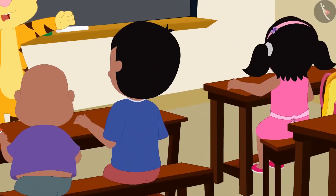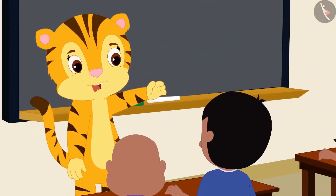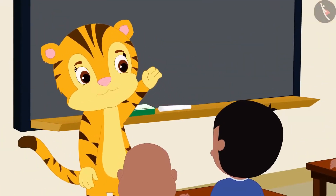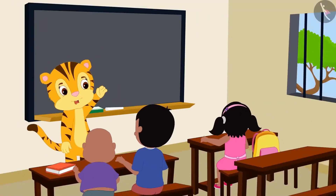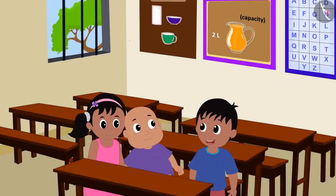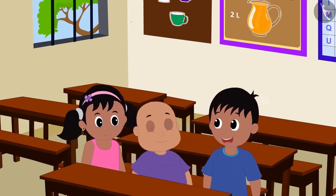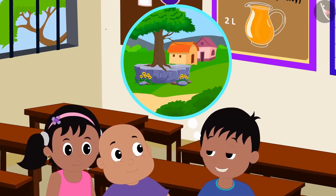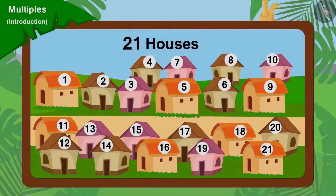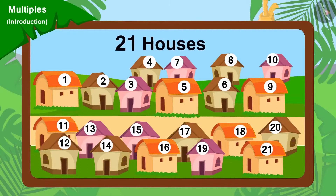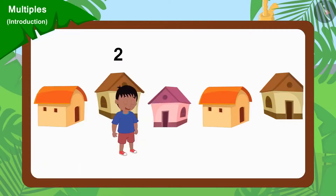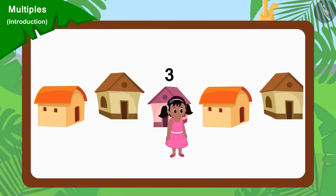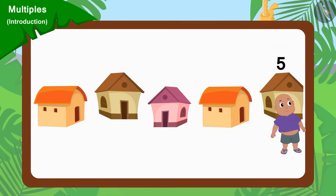Raju, Pinky and Bablu have been assigned the task to collect donations to help the poor by their teacher Mrs. Khan. Raju told Pinky and Bablu a plan. He said that they would not go to the same house but go to different houses. There are a total of 21 houses in the village. Raju will go to every second house, Pinky will go to every third house, and Bablu will go to every fifth house.